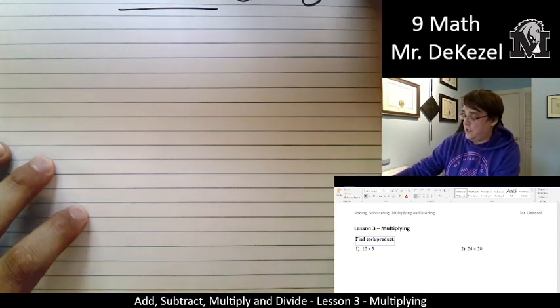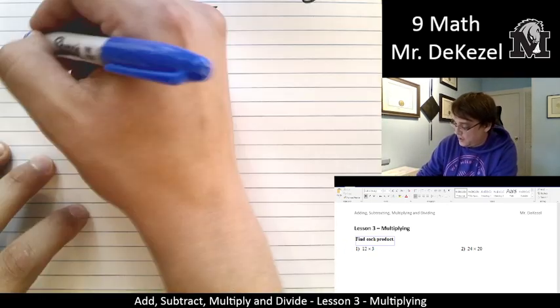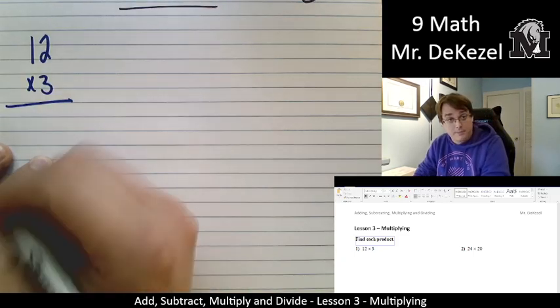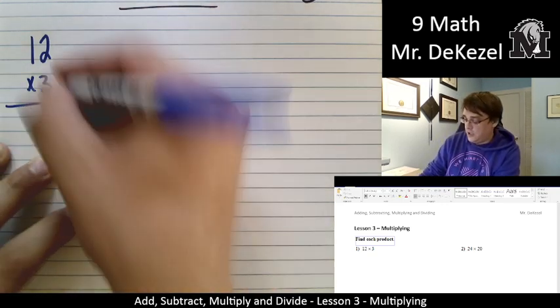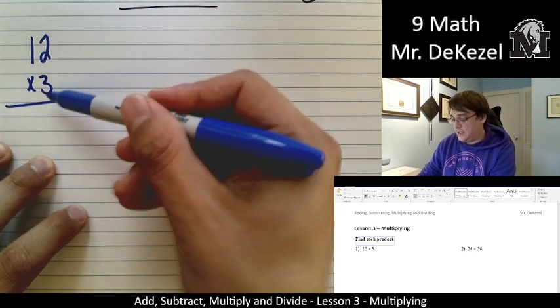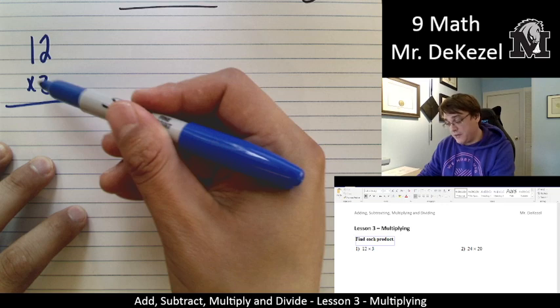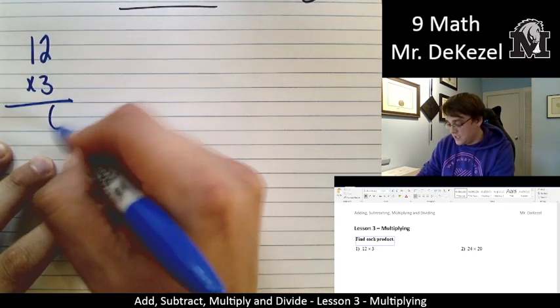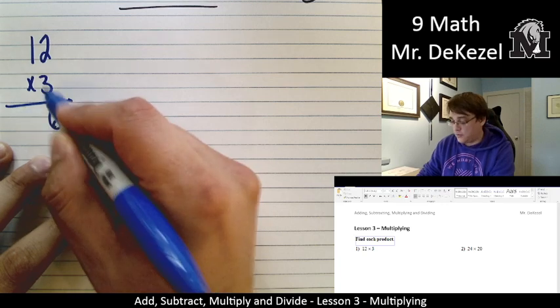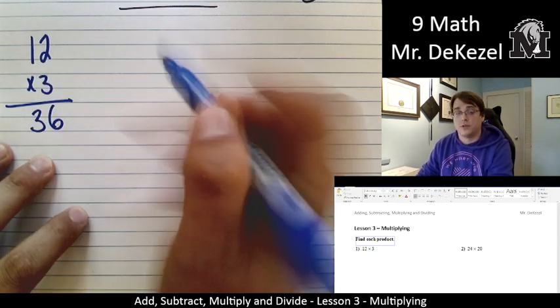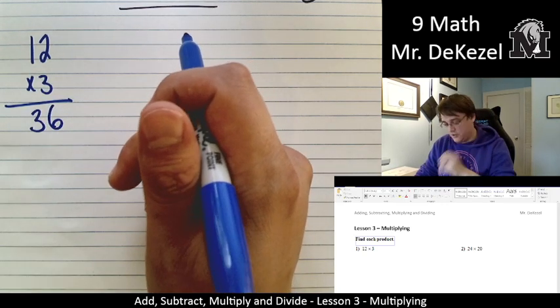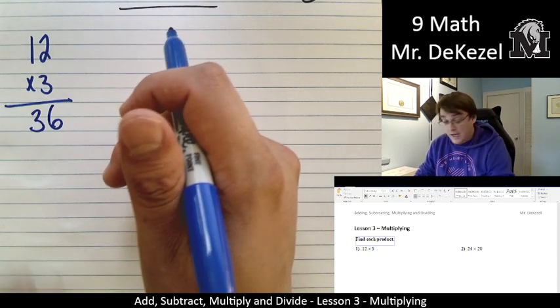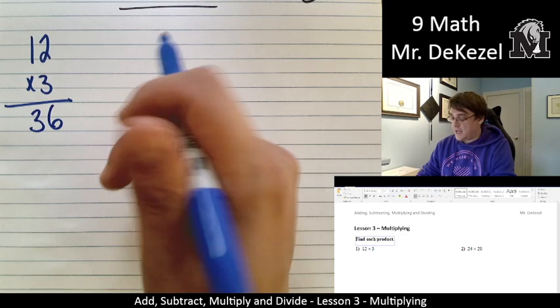First one we have is 12 times 3. This is one that you could or even should be able to do in your head, but we will show it here just for the process. We take the number on the bottom and we multiply it by both of these numbers. So 3 times 2 is 6, and in the next column, we're gonna go 3 times 1 is 3. The answer is 36. If you just realize that it's 36 and you're like, I could have done that in my head, next time definitely do that, but that is okay.